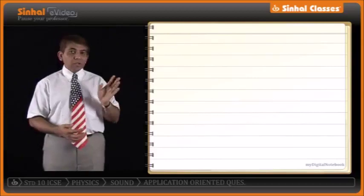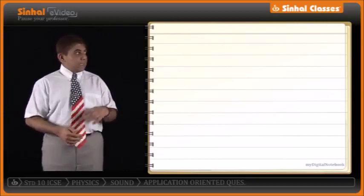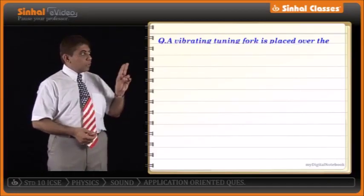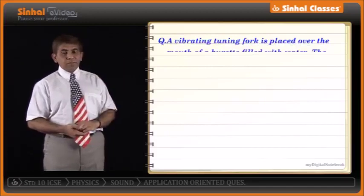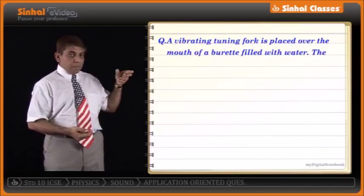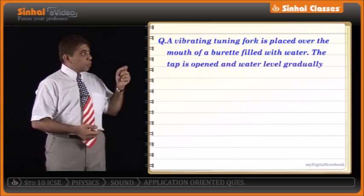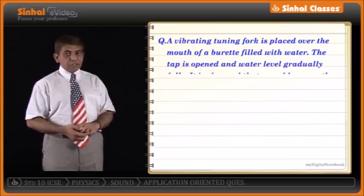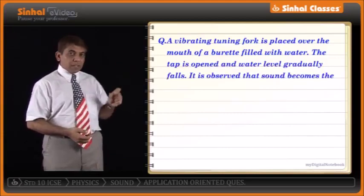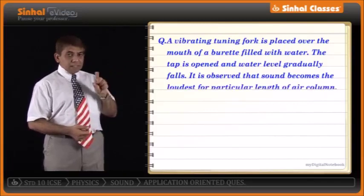We are considering application-oriented questions for this chapter. The first question says: a vibrating tuning fork is placed over the mouth of a burette filled with water. The tap is opened and the water level gradually falls. It is observed that the sound becomes loudest at a particular length of air column.